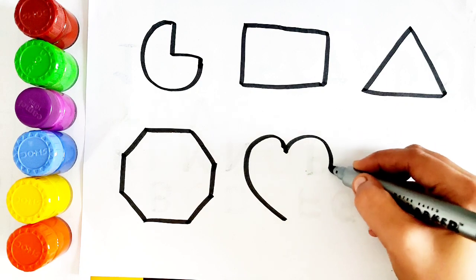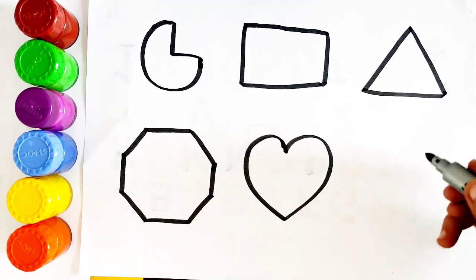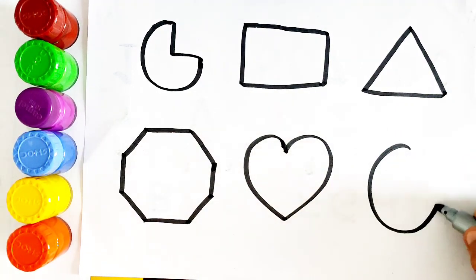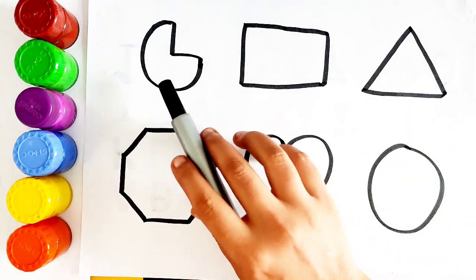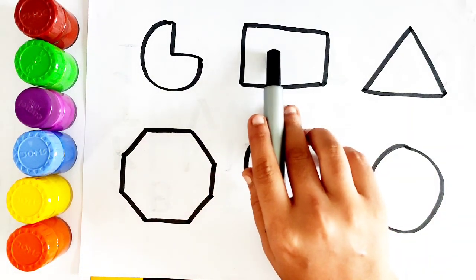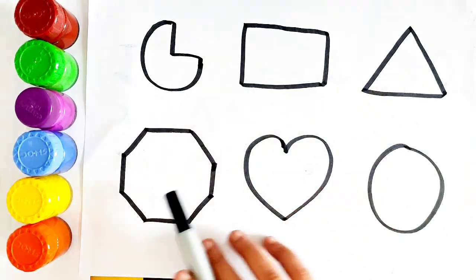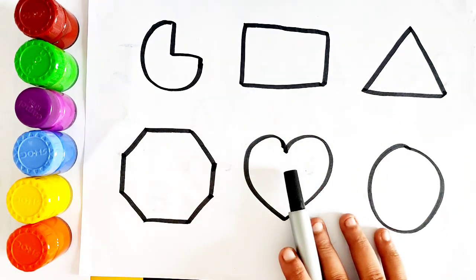Octagon, heart. Circle, oval. Rectangle, triangle. Octagon, heart. Circle.